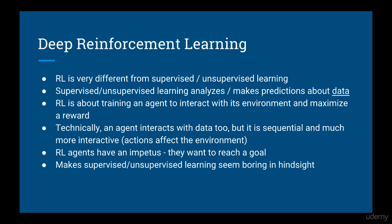Unlike supervised and unsupervised machine learning algorithms, reinforcement learning agents have an impetus — they want to reach a goal. This is such a fascinating perspective, it can even make supervised and unsupervised learning seem boring in hindsight. Why train a neural network to learn about the data in a database, when you can train a neural network to interact with the real world?